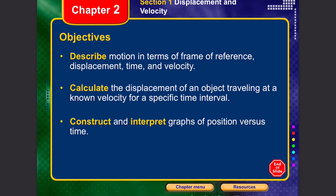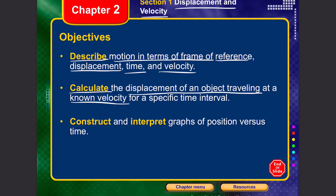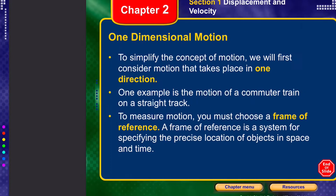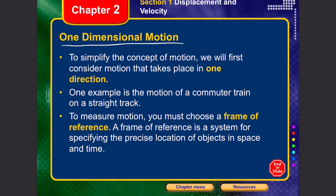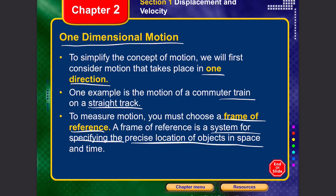In Section 1, the objectives are to describe motion in terms of frames of reference, displacement, time, and velocity; to calculate the displacement of an object traveling at a known velocity for a specific time interval; and to construct and interpret graphs of position versus time. To measure motion, you always need a frame of reference — a system for specifying the precise location of objects in space and time.